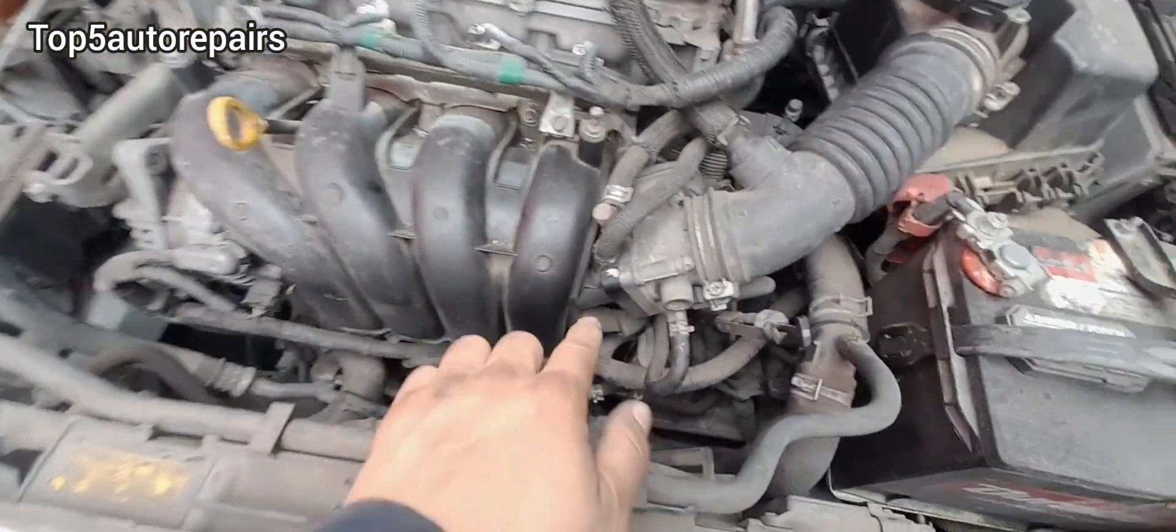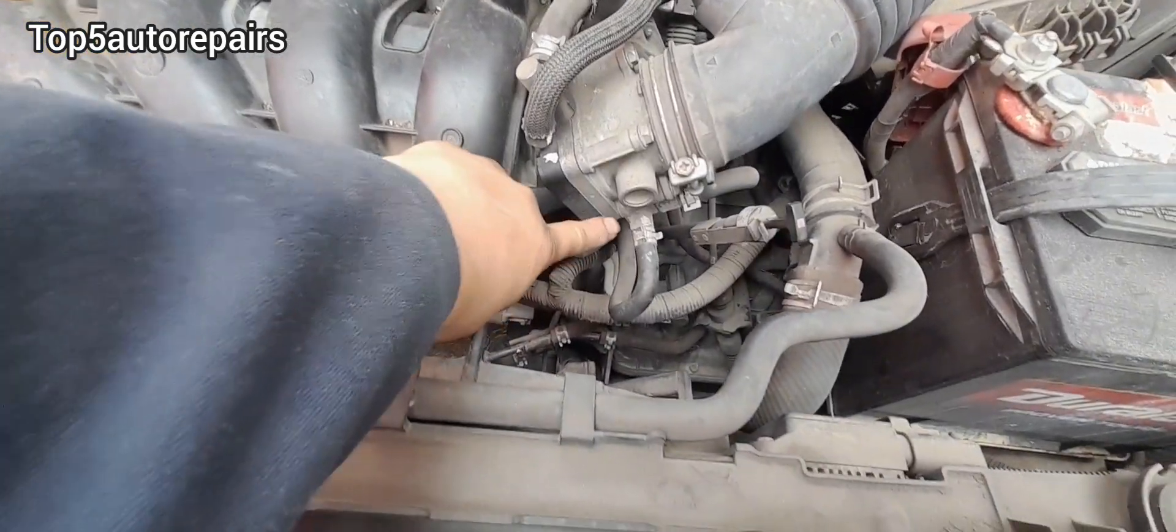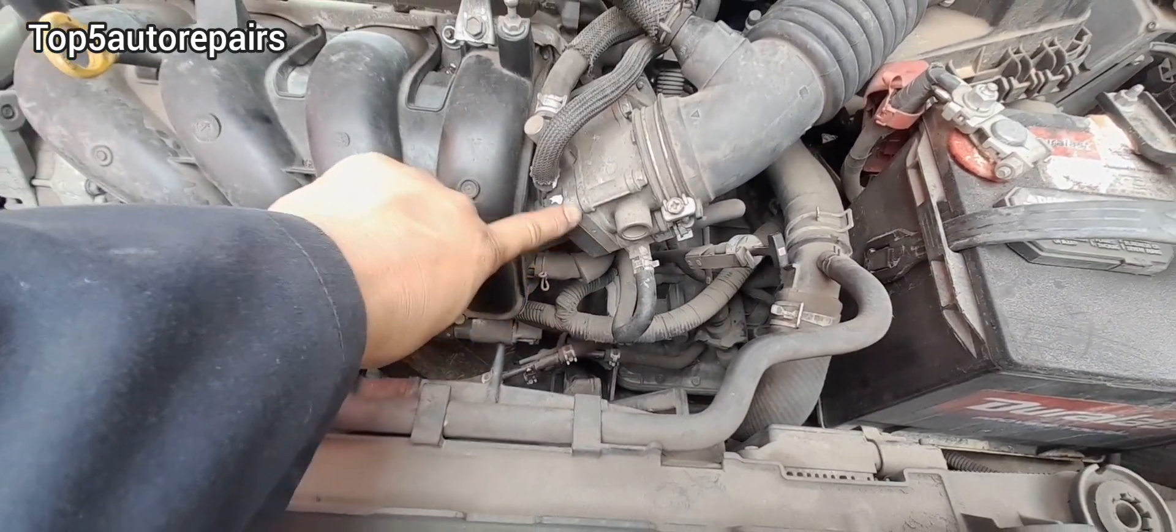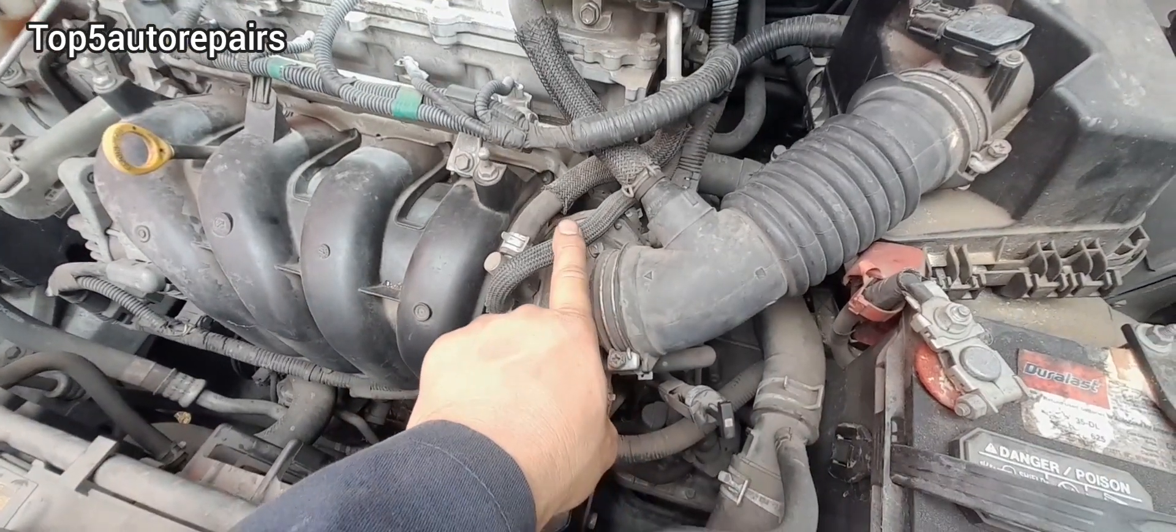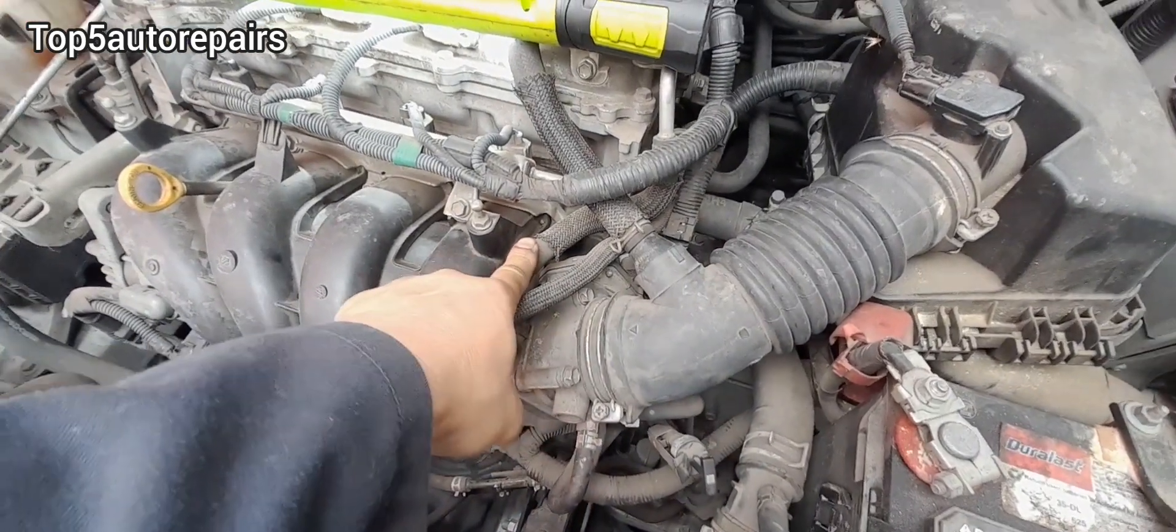Next, check for vacuum leak right at the throttle body gasket. Next, check for vacuum leak right at the vacuum hose. If there are cracks on the vacuum hose, go ahead and replace the vacuum hose.